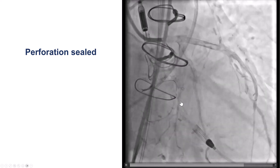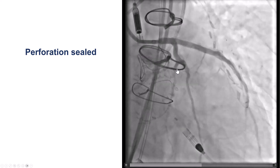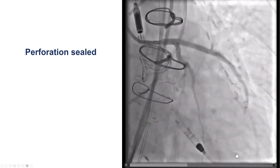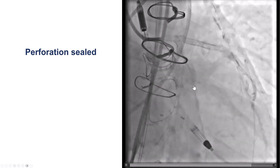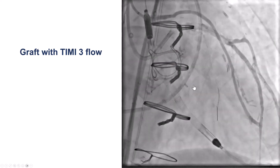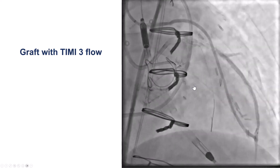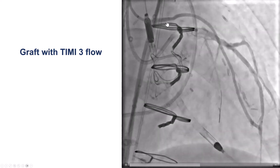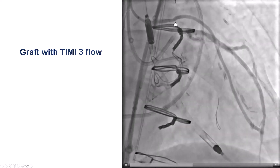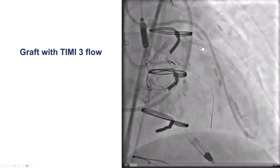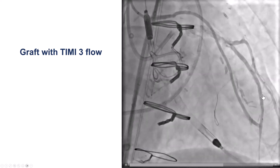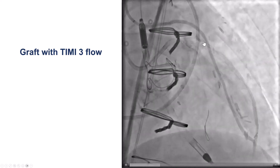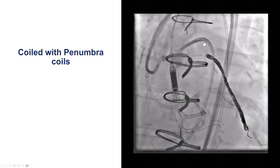Fortunately, we did not have any major diagonals or major septals in that area. Now we have a nice result with TIMI flow into the LAD and TIMI flow into the circumflex. The problem now was that we had a lot of competitive flow from the radial graft. Although this radial graft kept failing, at this point it was open and providing a lot of competitive flow. When there is much competitive flow, there is a risk of thrombosing the native vessel that was just re-canalized. So we ended up coiling it.